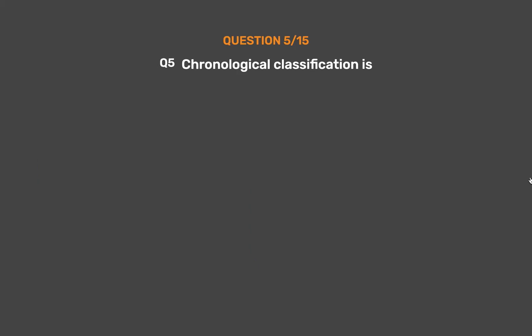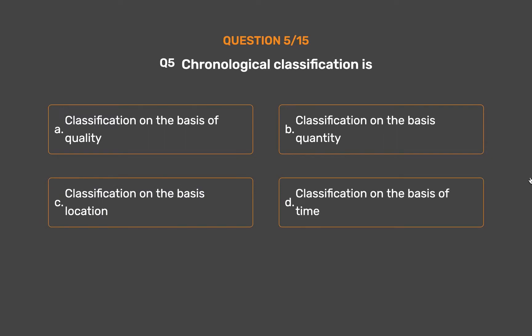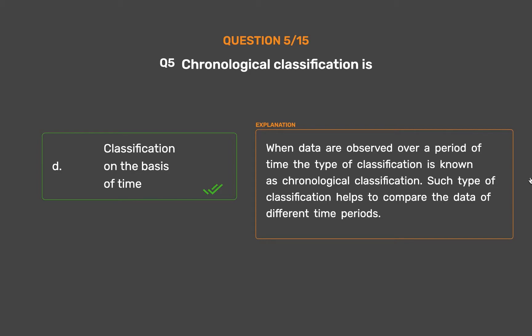Question number 5. Chronological classification is: Option A: Classification on the basis of quality. Option B: Classification on the basis of quantity. Option C: Classification on the basis of location. Option D: Classification on the basis of time. The correct answer is Option D: Classification on the basis of time. When data are observed over a period of time, the type of classification is known as chronological classification.